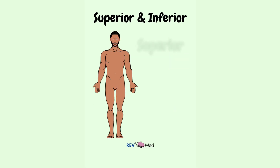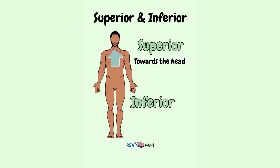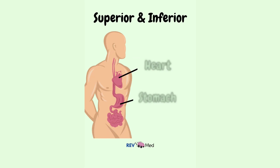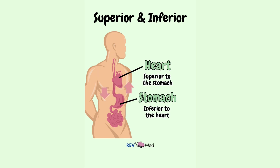First we have the terms superior and inferior. Superior means towards the head, or it can also mean upper or above. Inferior means towards the feet, or lower or below. So we'll say the heart is located superior to the stomach, or the stomach is located inferior to the heart.